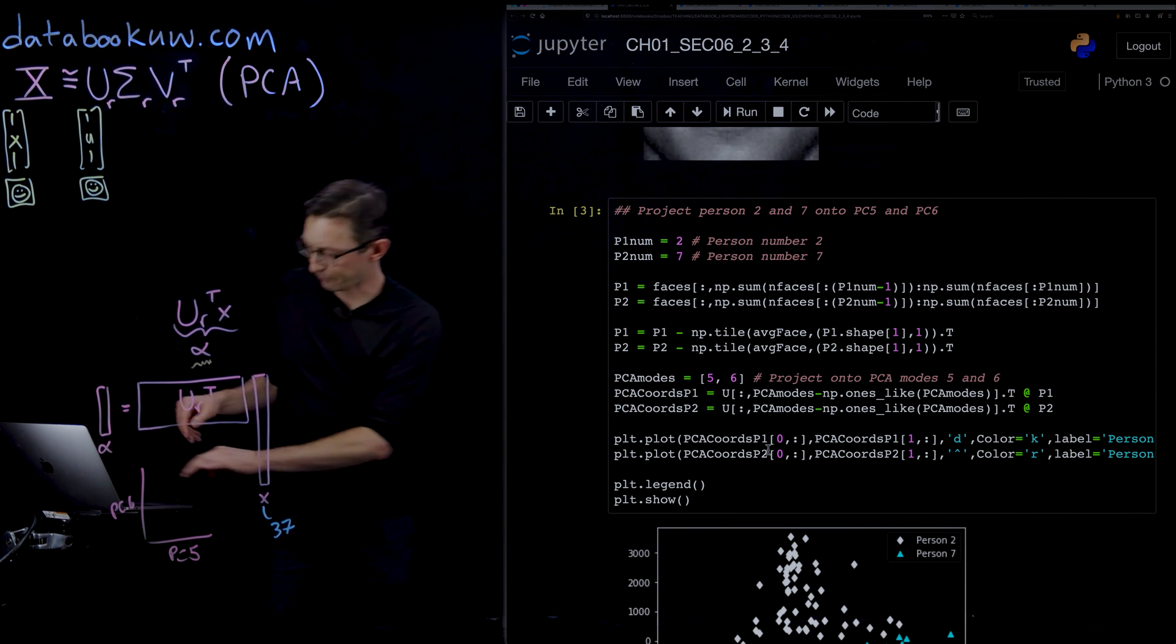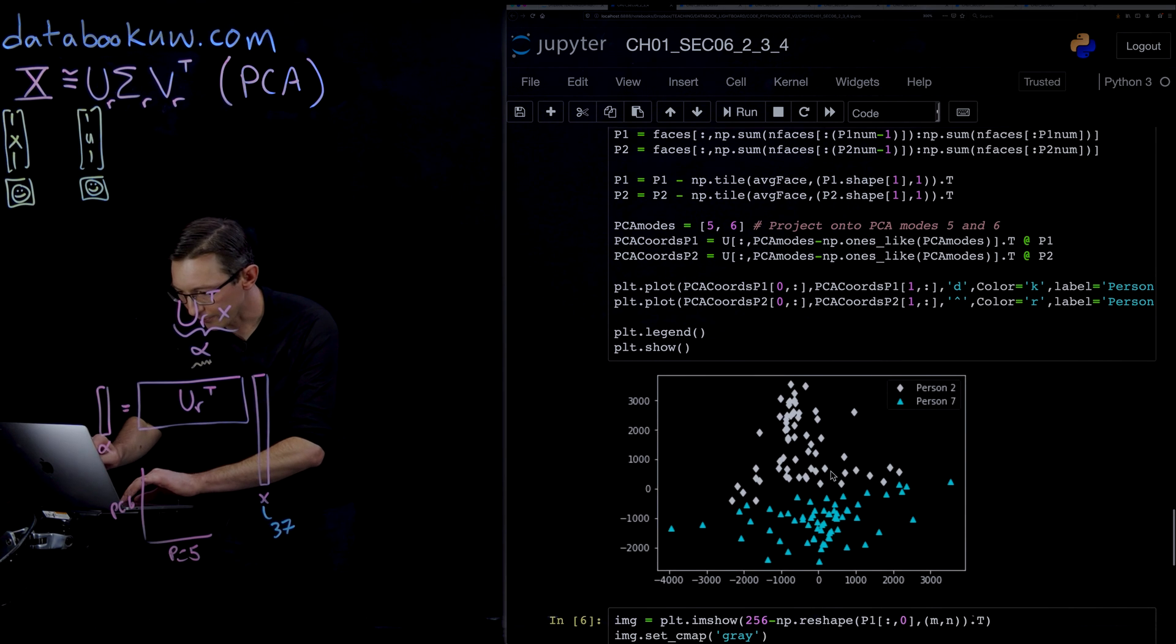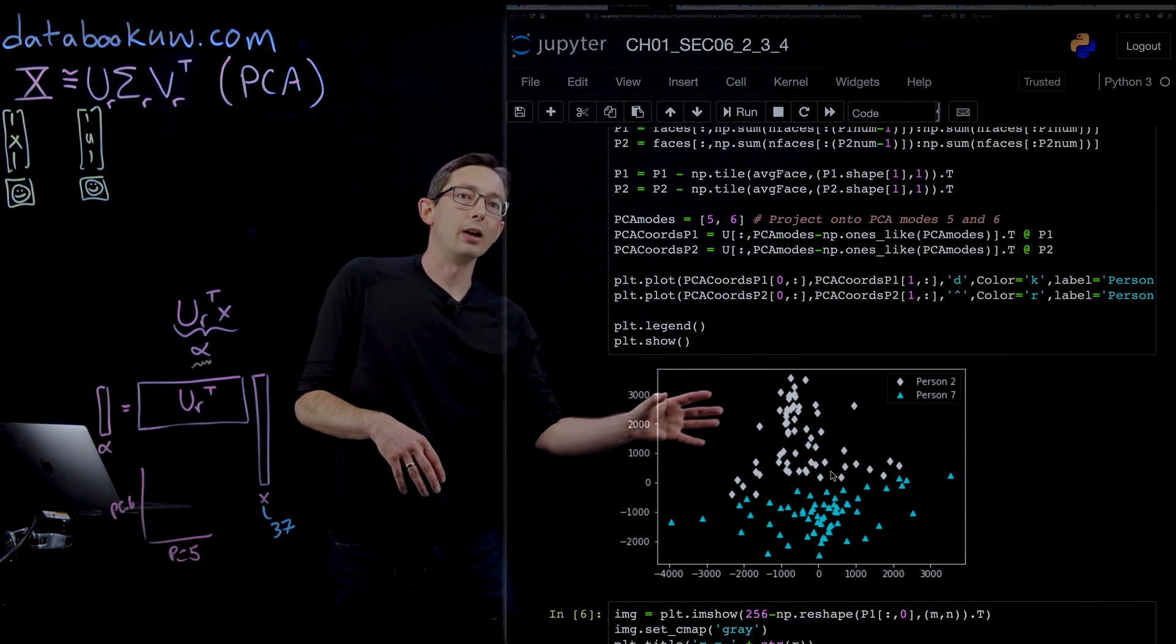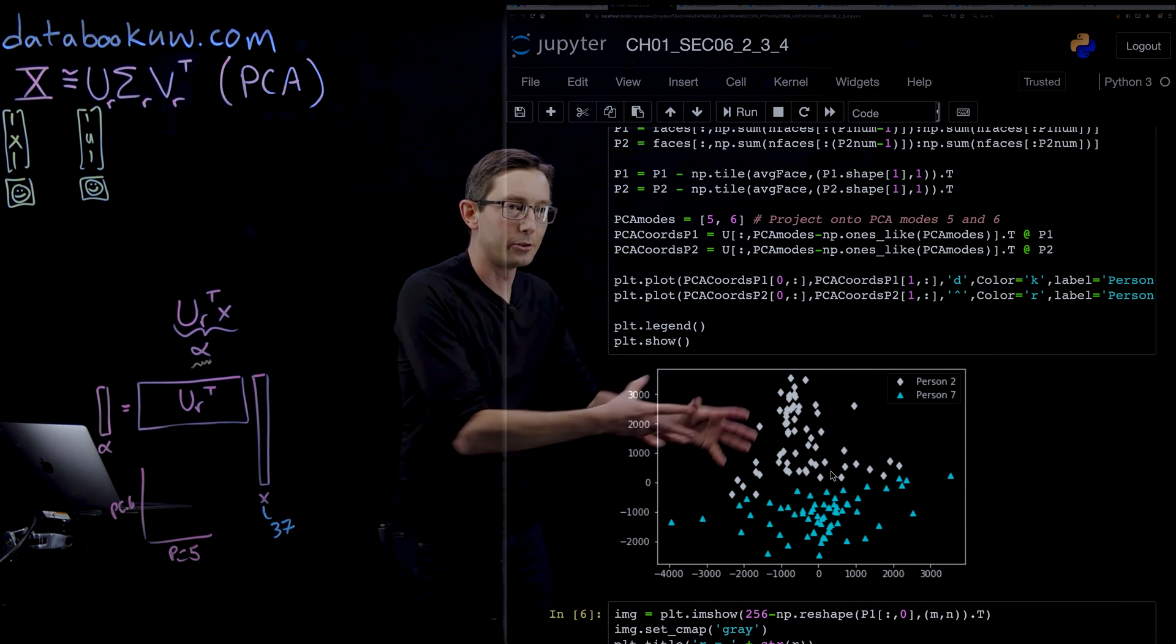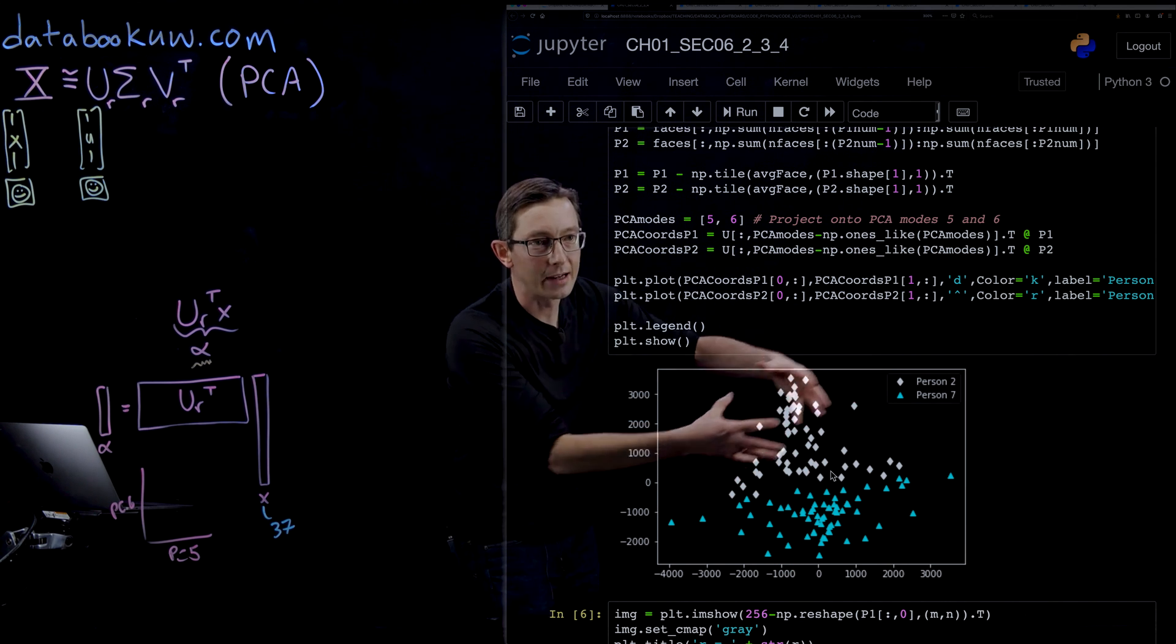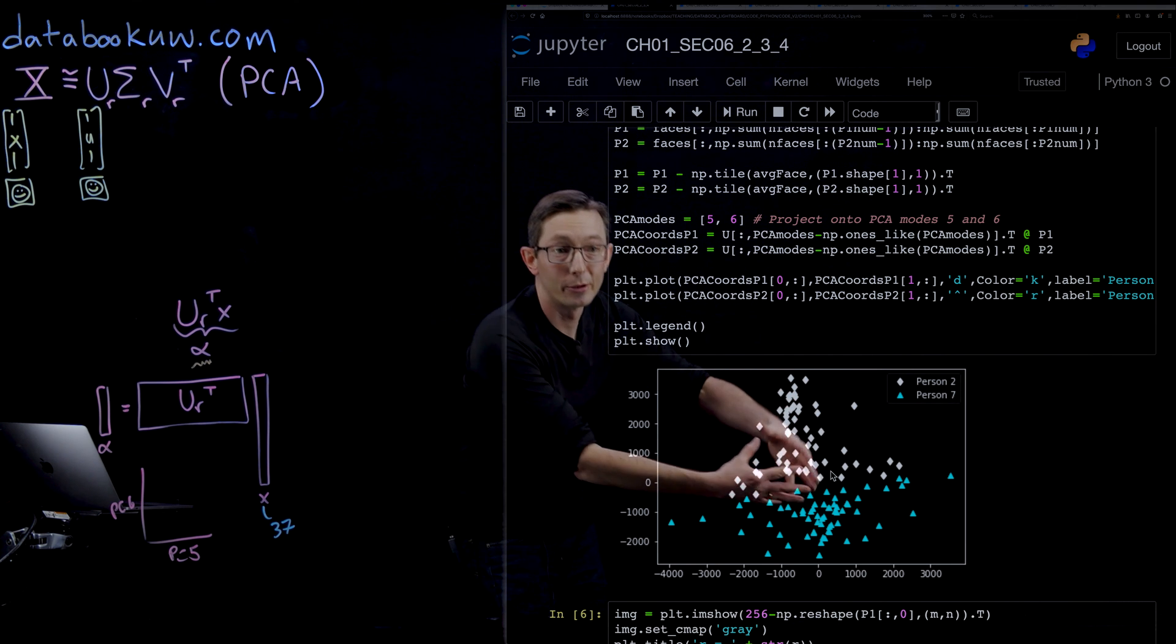When I do that, what we see is that person 2 and person 7 really nicely cluster in this principal component space. Almost all of the white diamonds for person 2 are up here.